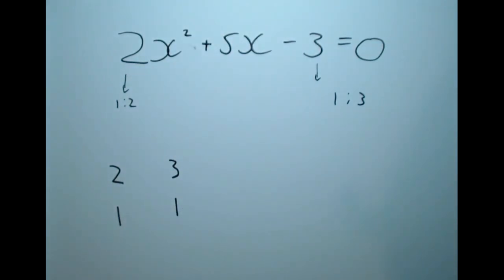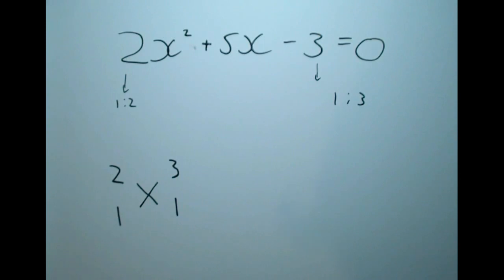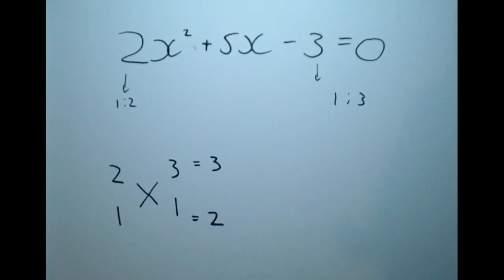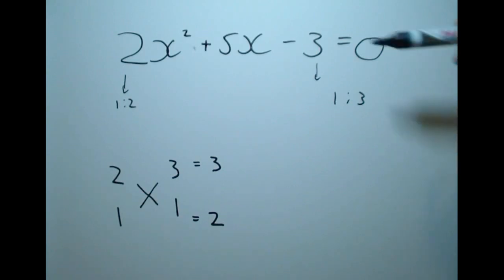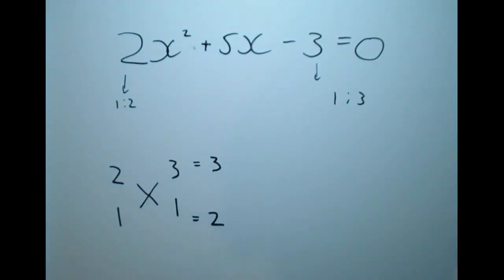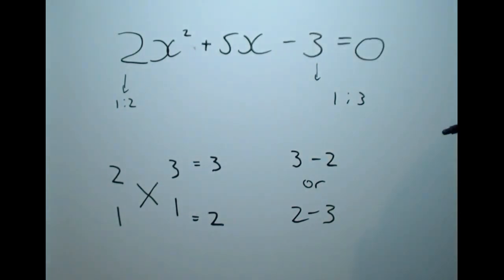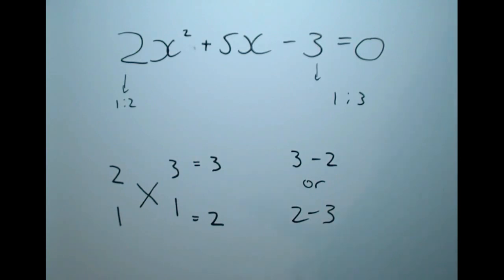Now I am going to cross multiply, as the method name suggests. I put my cross in and multiply numbers that are at opposite ends. So 2 times 1 gives me 2, and 1 times 3 gives me 3. Now I need to use these numbers to make the middle number. Because of the negative sign, as explained in the simple quadratics video, they need to be different signs. So for this combination to work I must have 3 minus 2 or 2 minus 3 equal to my middle number. My middle number is plus 5, and neither of these gives me plus 5, so this combination does not work.